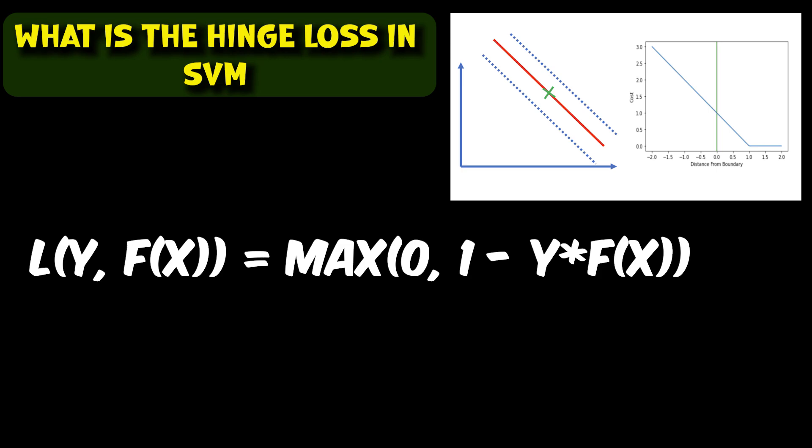Where y is the true class label, that is plus 1 or minus 1, and f(x) is the predicted output for the given input x, and max of 0 and the second element is a hinge function.